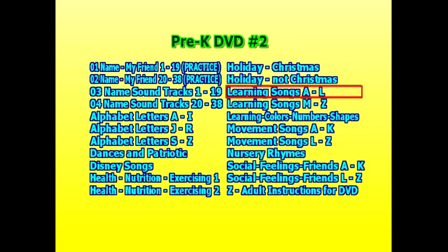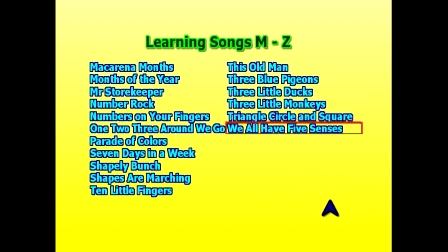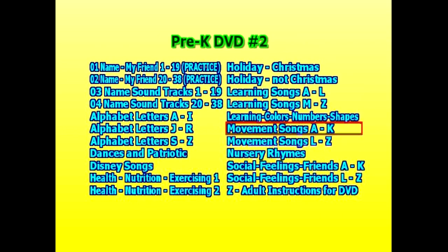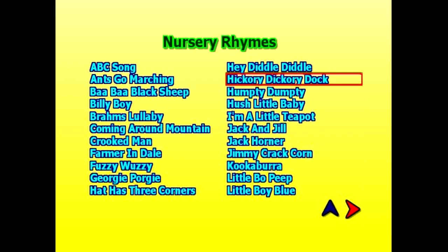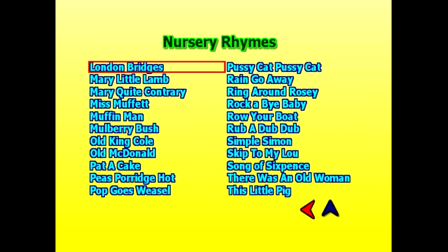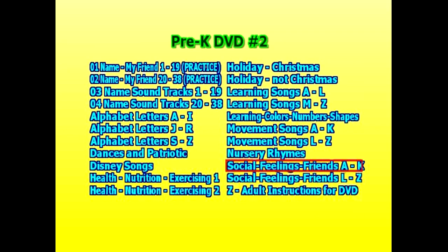We have learning songs A to L and learning songs M to Z — click on either folder and there are a lot of choices. Then movement songs A to K and movement songs L to Z — again, a lot of choices. Nursery rhymes — here are 22 songs, and if you click the red arrow you'll see another 22 songs, for 44 nursery rhymes total. Back to the main menu. Social Feelings and Friends A to K, and Social Feelings and Friends L to Z — lots of songs to choose from.